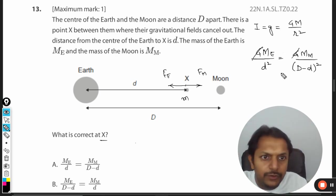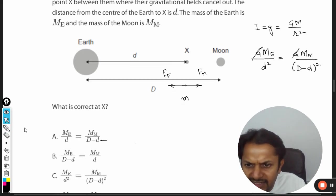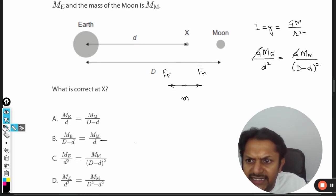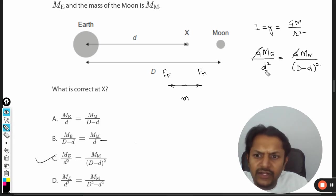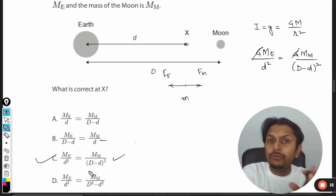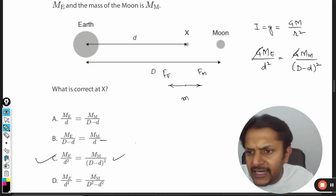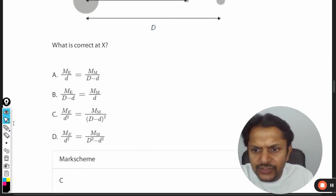We would be finding this relation here. That relation will be C, I think. ME divided by d squared equals MM divided by D minus d whole squared. There is no doubt about it, so the answer will be C. Let's see if the answer is given in the mark scheme. Yes, it is correct.